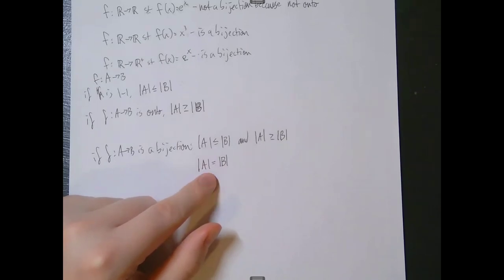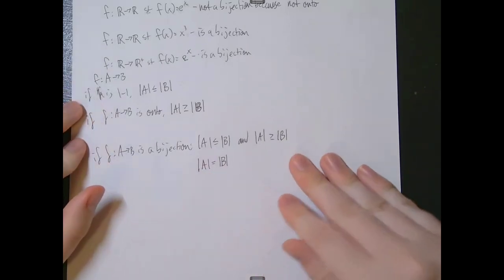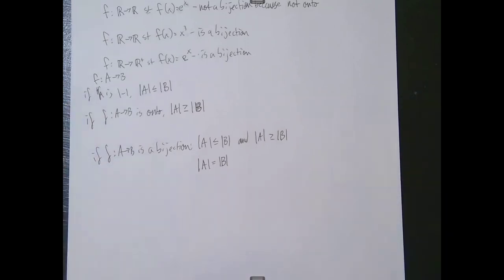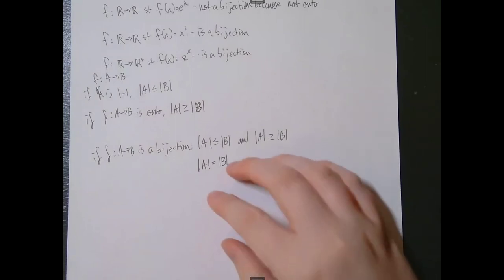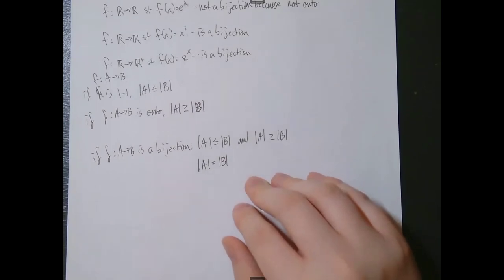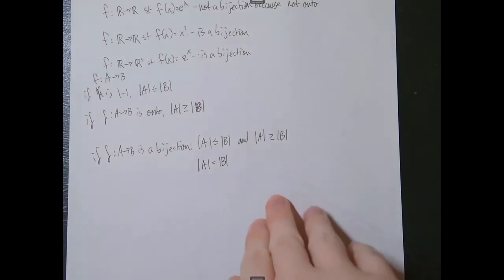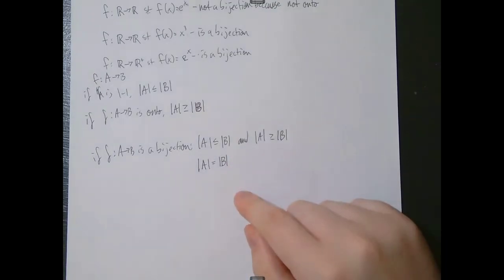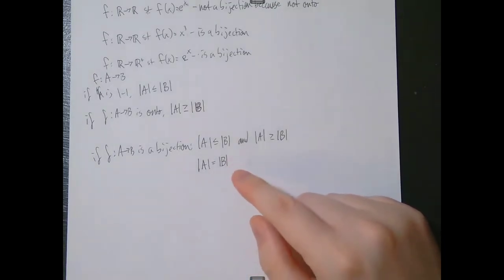All we have right now are the definitions of one-to-one, onto, and bijection. I really recommend familiarizing yourselves with these definitions — we'll be using them a lot throughout the rest of the quarter. If you're not comfortable with them, please ask me as soon as possible and feel free to watch this video or the intro to functions video as many times as you need. I'll see you all in the next video.